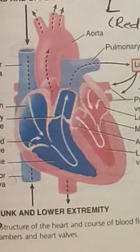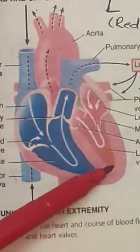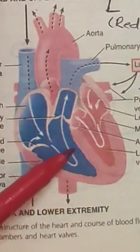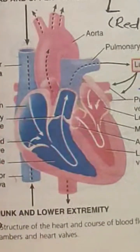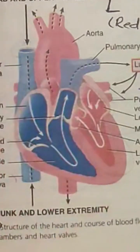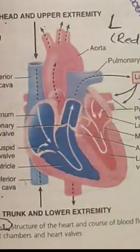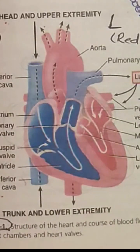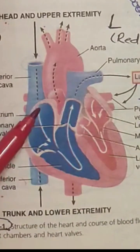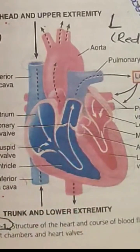The heart is divided into right and left halves by a septum. The right side is shown in blue because it pumps deoxygenated blood, and the left side is shown in red because it pumps oxygenated blood. The right and left halves are further subdivided into four chambers: the right atrium, right ventricle, left atrium, and left ventricle.